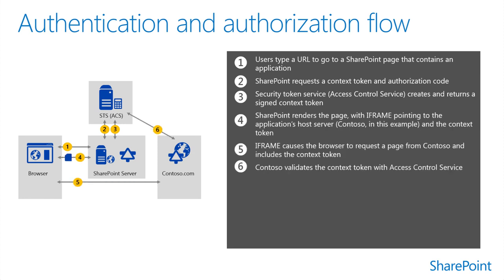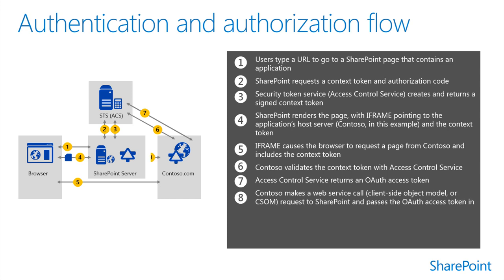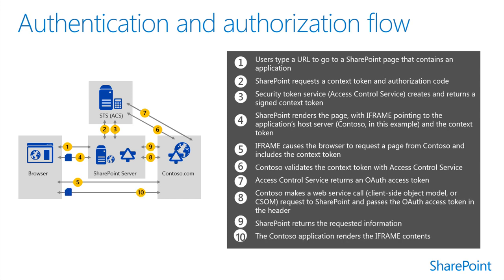In Step 2, SharePoint detects that a request is for an app in SharePoint Online. It requests the security token service to create and sign the context token with the context information. This context token can be used later — for example by contoso.com — to request an access token from Access Control Services. The contoso.com server can then use the access token to talk back to SharePoint if the contoso.com app wants to make a web service call to SharePoint later.